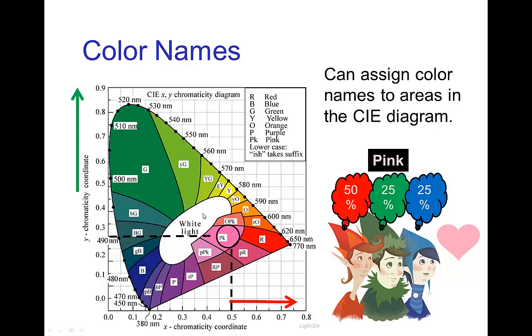Now we can go around and actually assign color names to these various regions in this map. The central part is perceived as white and we have different parts which are perceived as green and yellow-green and so forth. Here I've marked an area which is fifty percent red cone, twenty-five percent green, twenty-five percent blue and that happens to land in a region which is labeled pink.